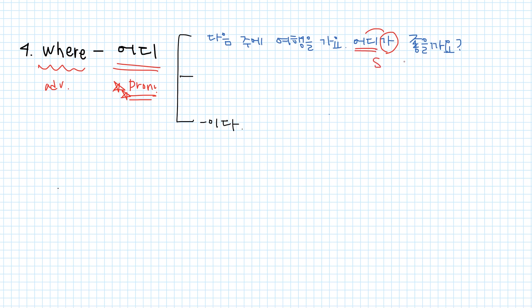Next one, where. In Korean, 어디. In English, where is the adverb, but in Korean, 어디 is a pronoun. Therefore, particles can be attached and also 이다. For example, 다음 주에 여행을 가요. I'm going on a trip next week. 어디가 좋을까요? Here, 가, the subject particle is attached to 어디. Then this is the subject. In English, it would be where would it be good, but in Korean, just where is good. 어디가 좋을까요?